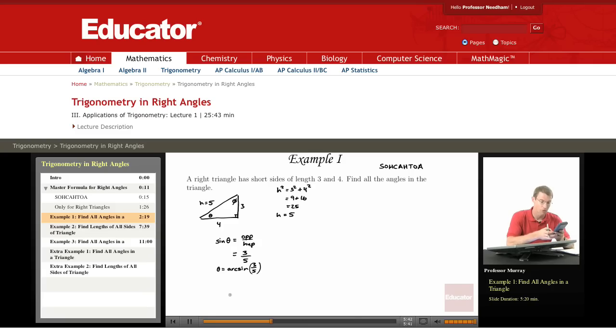I'll do the arcsine of 3 fifths which is 0.6 and it tells me that that is approximately equal to 36.9 degrees. So I found one of the angles in the triangle. Of course another one is a right angle so it's 90 degrees.